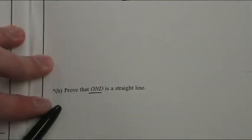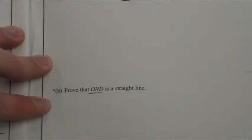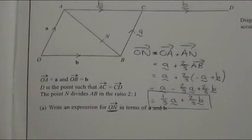In question 24b we're asked to prove that OND is a straight line. Now back in the old days they would ask you what the relationship was and it was always a straight line, but now they're a bit smarter and they're asking you to prove why it is a straight line. So let's have a look at the picture.